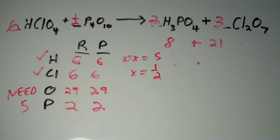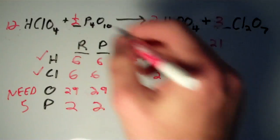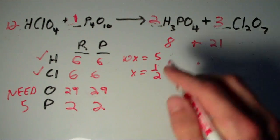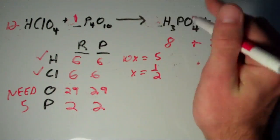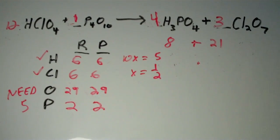However, we still have another fraction. We have to multiply everything by the denominator to get whole numbers. Six times two is 12. One half times two is just one. Two times two is four. And three times two is six.